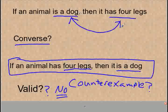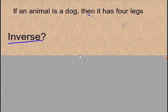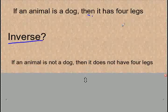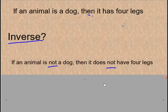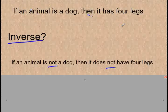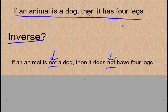The next statement is the inverse. If an animal is a dog, then it has four legs — the inverse of that would be: If an animal is not a dog, then it does not have four legs. All we really have to do is take the original statement and add 'not' — we make both parts, the if and the then, negative. That's how you write the inverse.